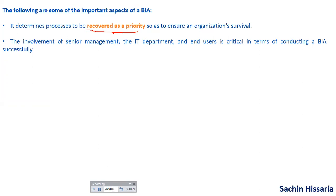The priority will be determined from the Business Impact Analysis report. And in BIA, the involvement of senior management is very critical. This is the theory part of the BIA.